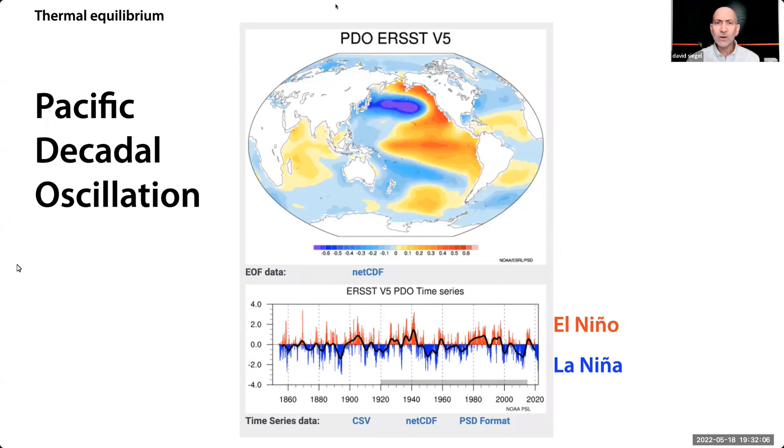Right now, we're in the La Nina cooler phase of the Pacific Decadal Oscillation. This is clearly a cycle, but an irregular one.